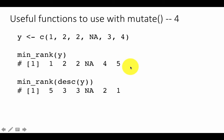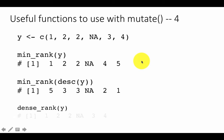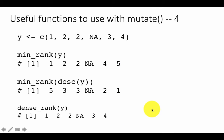There is another variation called dense_rank. With min_rank, because there were two second ranks, rank 3 was skipped and the next element became 4. If you do not want that skipping behavior, you use dense_rank. You still get 1, 2, 2, but then it considers that only 2 ranks have been used, so the next value becomes 3 and the one after becomes 4. Dense_rank does not skip rank positions when there are ties.